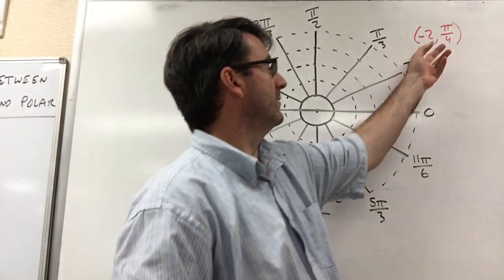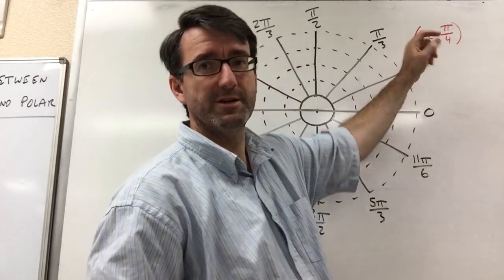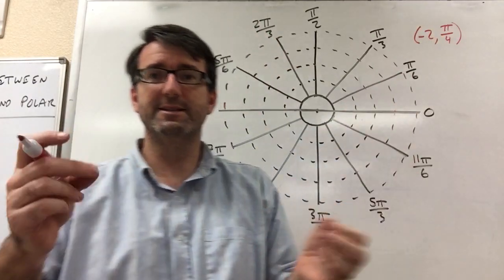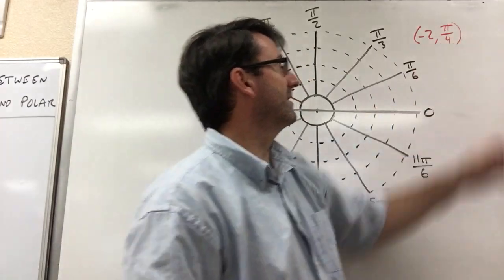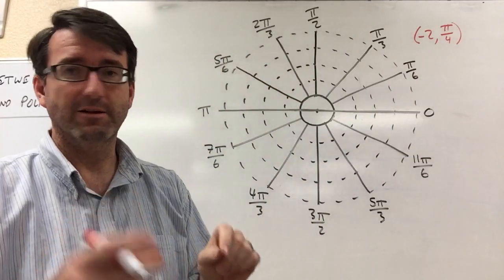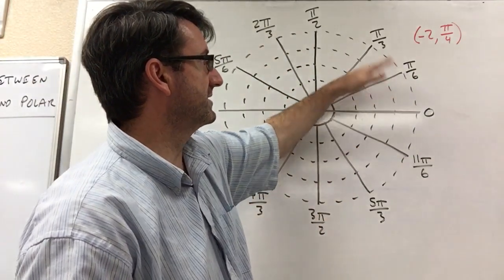So with polar coordinates, this first number is r, it's the radius, it's the distance from the center. And the second number is theta, that's the angle from this initial side.